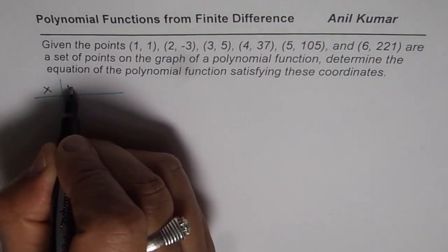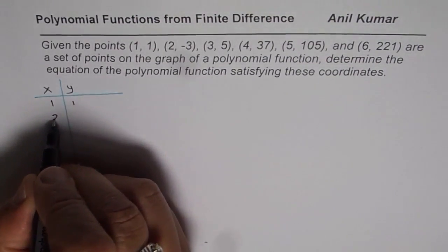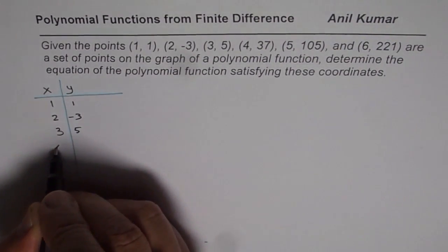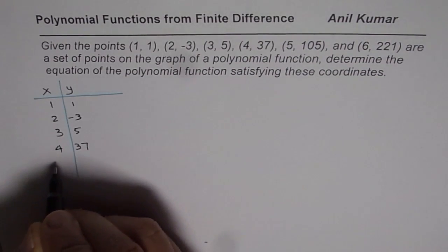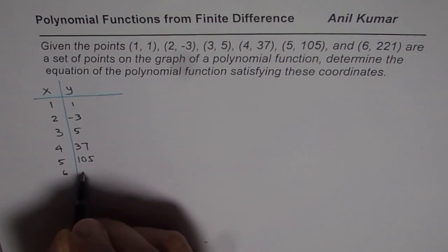We will list x, y coordinate points. So (1,1) is the first one, then we have (2,-3), (3,5), (4,37), (5,105), and (6,221).